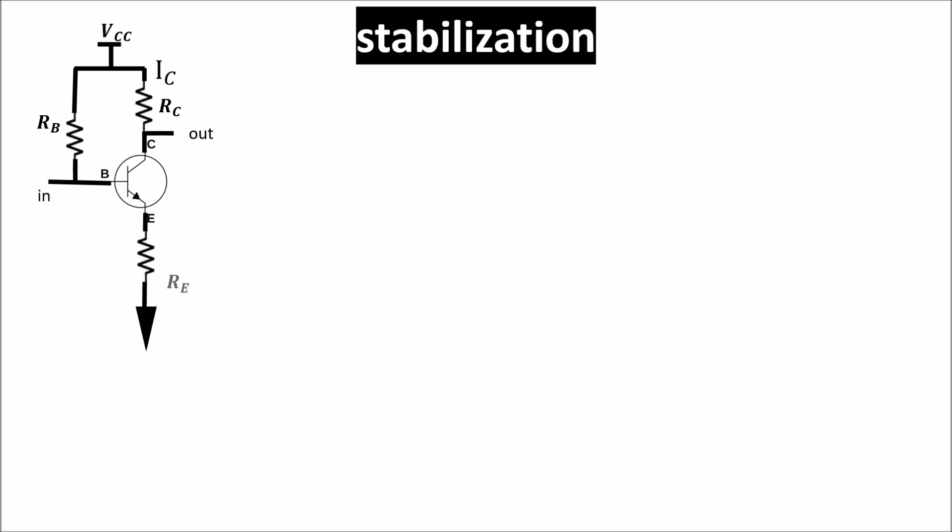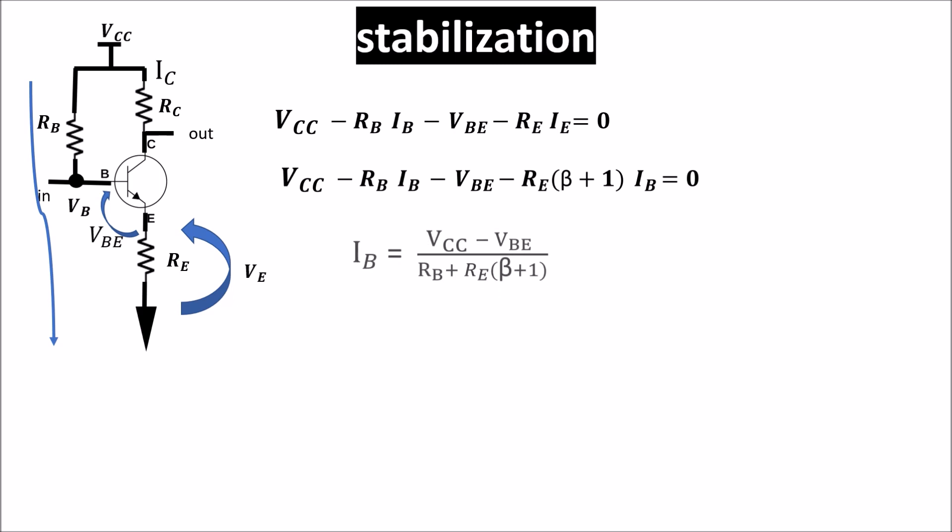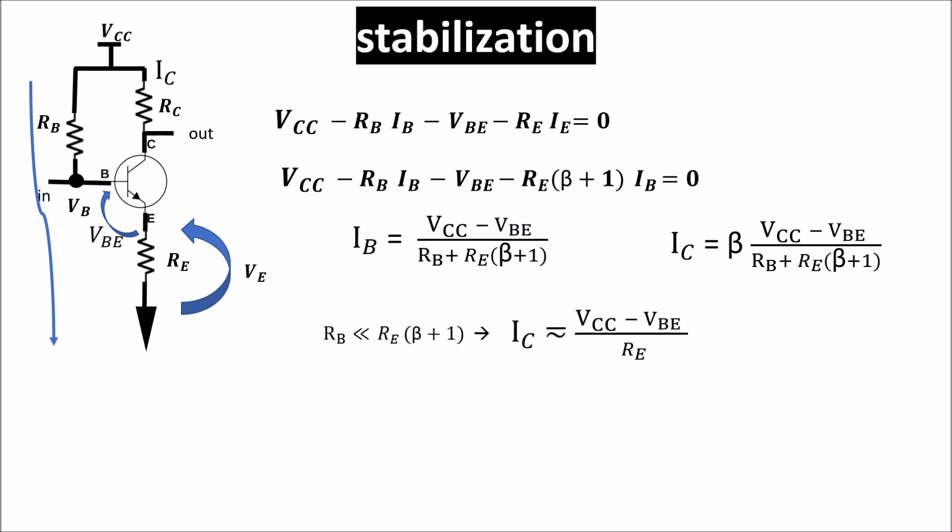And the easiest way is creating a negative feedback by putting an emitter resistor. You see in this circuit if IC increases, the voltage drop on RE increases. Since IB is fixed once fixed RB, VB is fixed as well. So if VE increases, VBE decreases, thus decreasing IC which is exponentially dependent on VBE. If we now apply Kirchhoff voltage law to the base side, we get this equation which becomes this, remembering IE is beta plus 1 times IB. So IB is this one and IC is this one, where we see that if beta plus 1 times RE is much more than RB, our IC doesn't depend on beta anymore and our quiescent point will change much less with beta or IC variation.